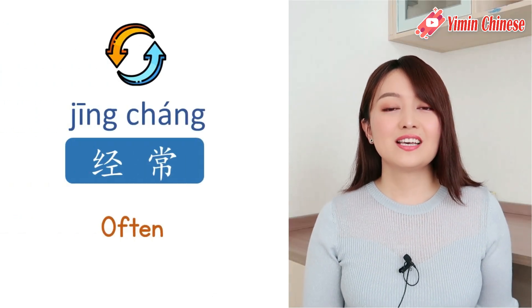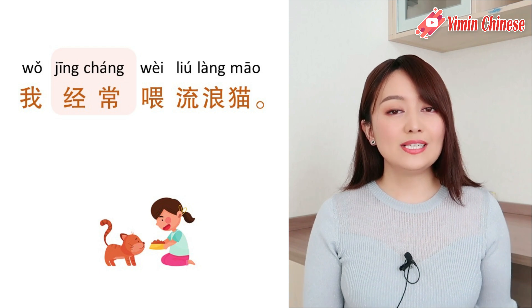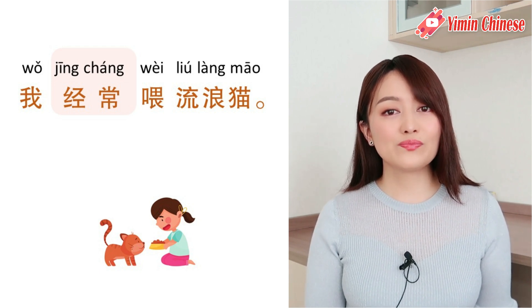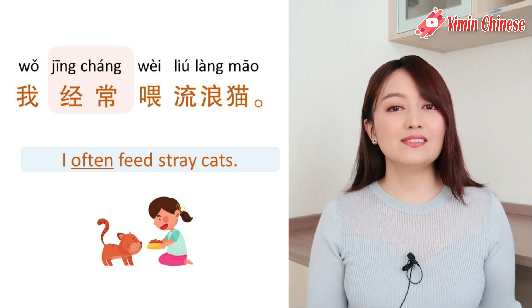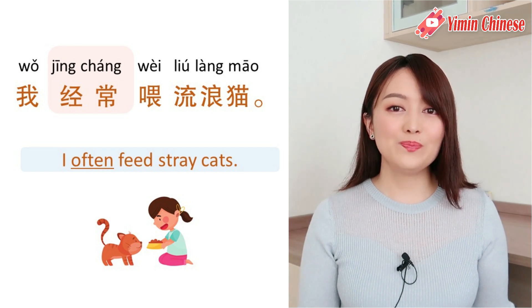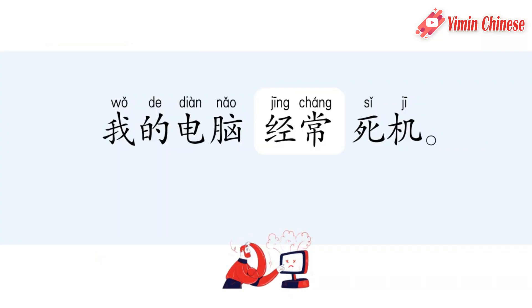好,下一个, often. It's 经常. 比如说 我经常喂流浪猫。I often feed the stray cats. Another example, 我的电脑经常死机。My computer often crashes.